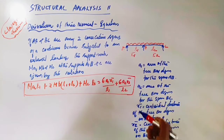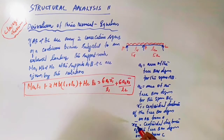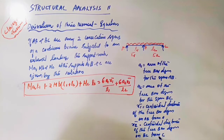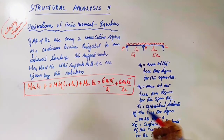A2 is the area of the free bending moment diagram for span BC. X1 bar is the centroidal distance from A, and X2 bar is the centroidal distance of the free bending moment diagram for BC from C.